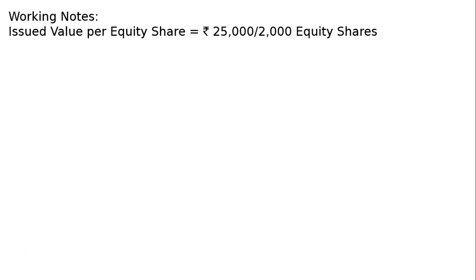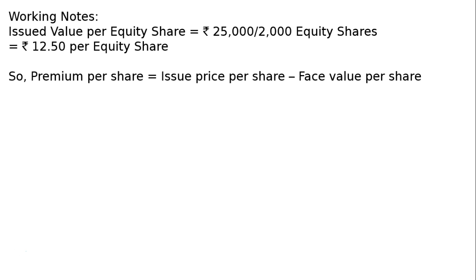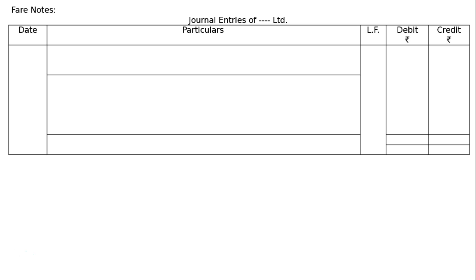Working notes: issued value per equity share. Assets worth rupees 25,000 are being issued for 2000 equity shares, so issue value per share is rupees 12.50 per equity share. The face value per share is rupees 10, hence premium per share equals issue price per share minus face value per share, that is rupees 12.50 minus rupees 10, which equals rupees 2.50.